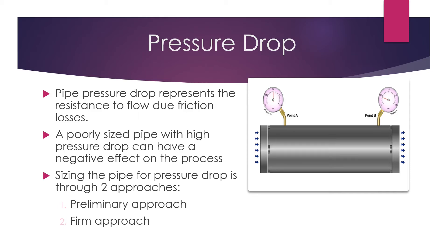That happens when we have the piping isometrics — we have the exact distances and pipe fittings, and we have the pressure drop in other equipment, so that we know the maximum pressure drop in the pipe. Now we can compare it with the total pressure drop we calculated, and make sure that the calculated pressure drop is less than the allowable pressure drop.